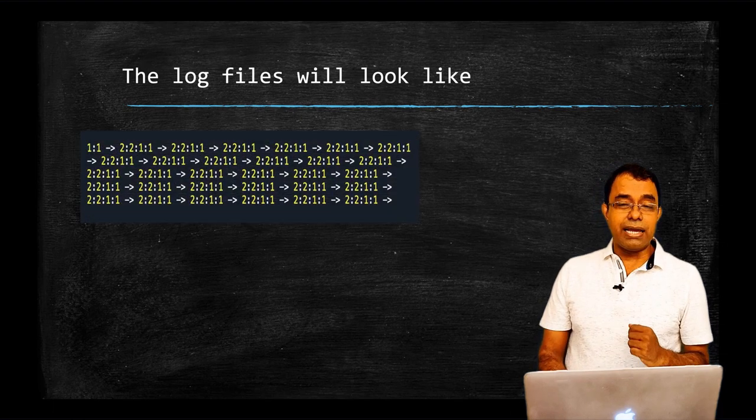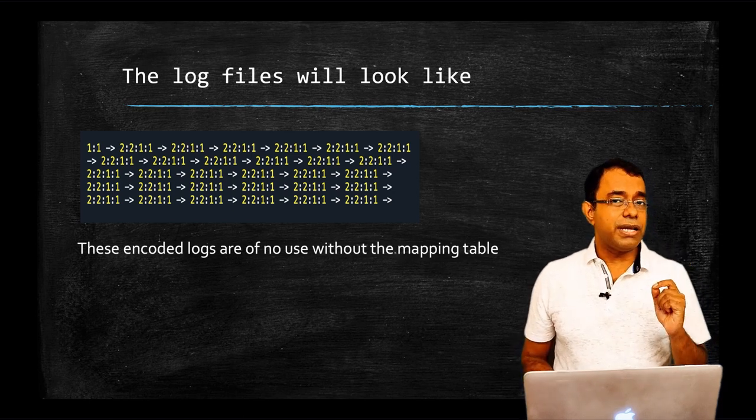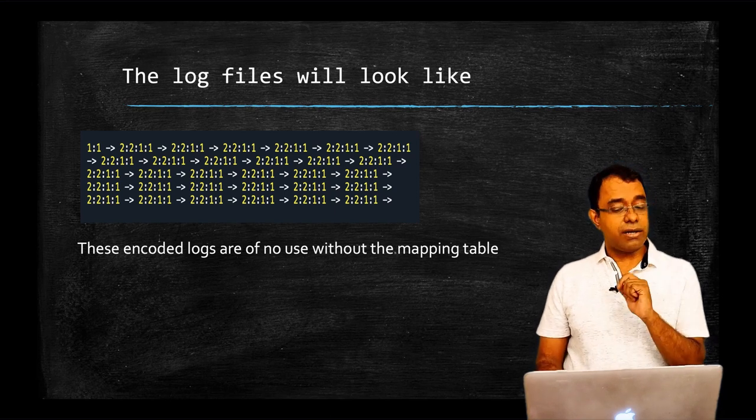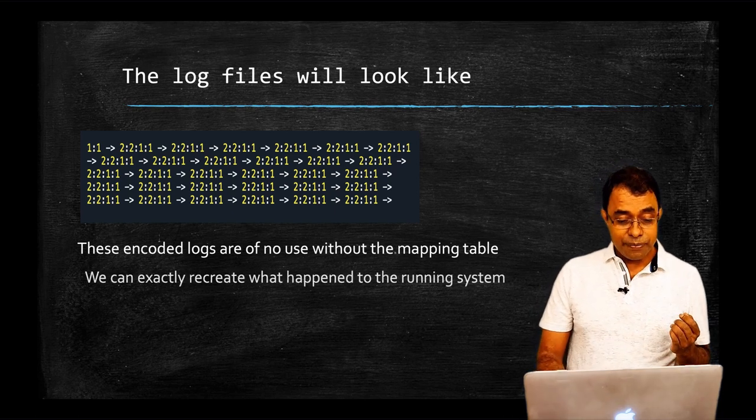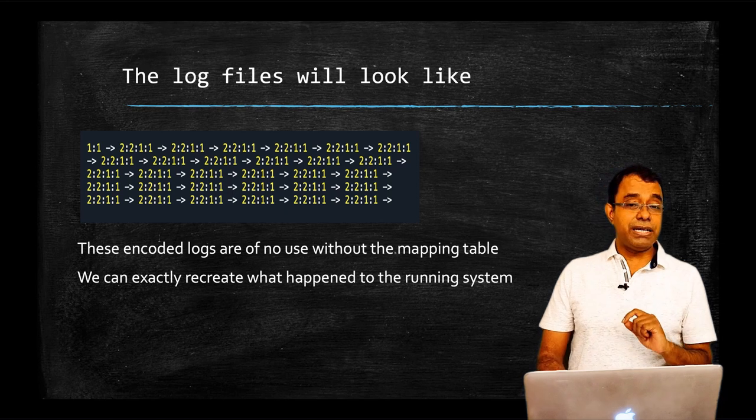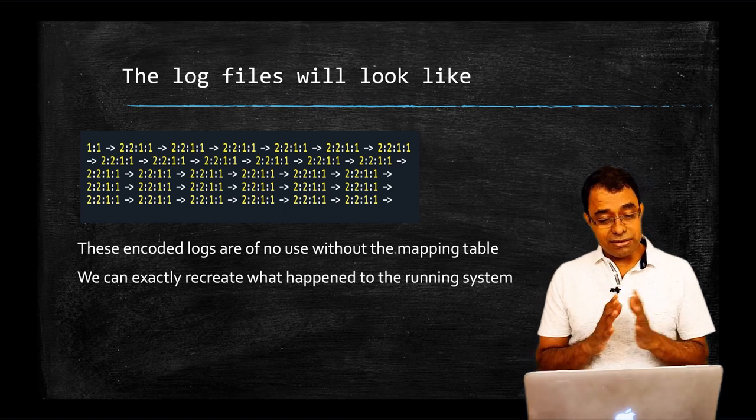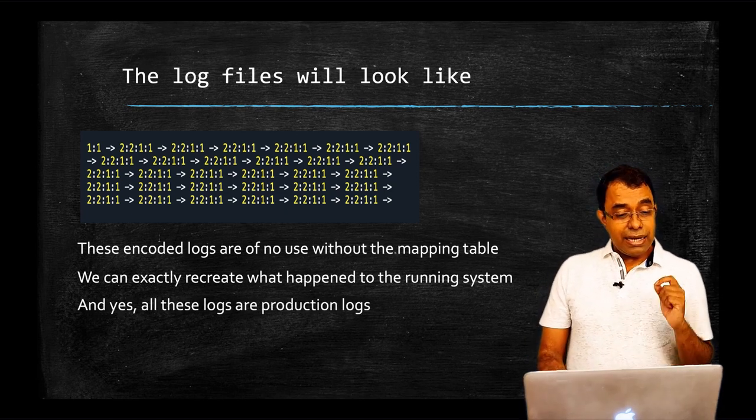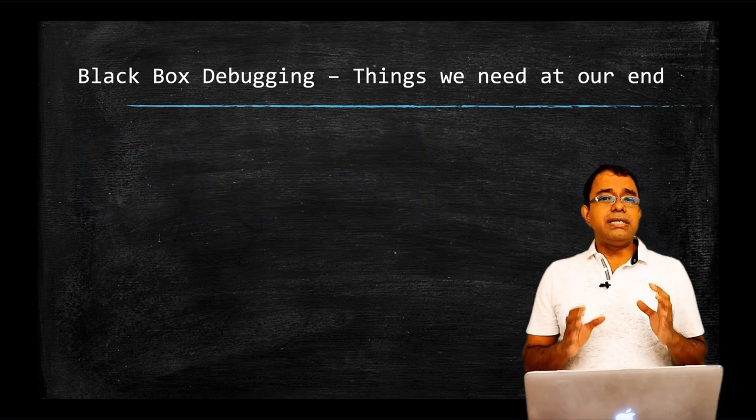Now, here is how the log files will look like. It will be jumbled sequence of 1, 2 and some arrow. These are encoded logs and are of no use to anyone who even hacked the production system and looked into that because they cannot make anything out of it, what it is, what it represents. They know it is doing something, but they will not be able to understand because they don't know how the code is written. But we can exactly regenerate what has happened to our running system because of the availability of our mapping table. We replace 1, 2 with our states. We will get to know what all states transition that has happened. And if we add roman 1 or 2, we can also know what all events have been triggered. And yes, all these logs of production, logs of production system is logging all those things.